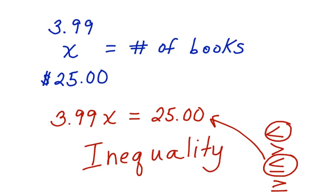Our next step in working through this problem is to take this equation and rewrite it using an inequality. Let's take a look. We have $3.99 times x is less than or equal to $25.